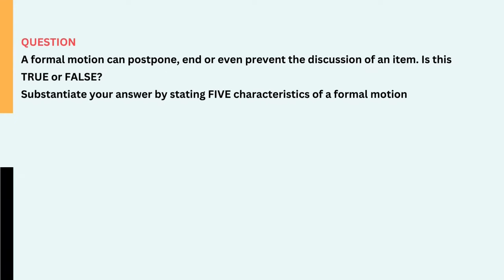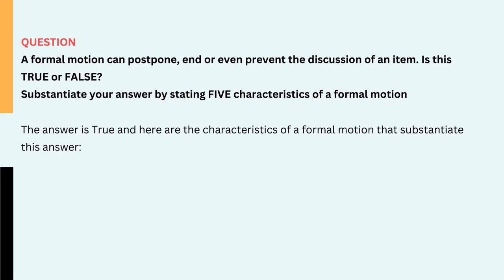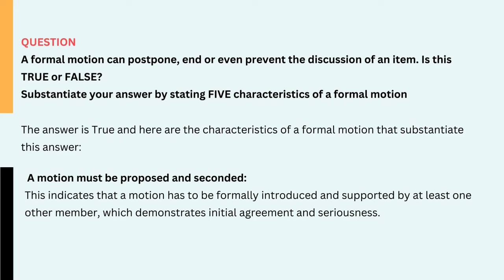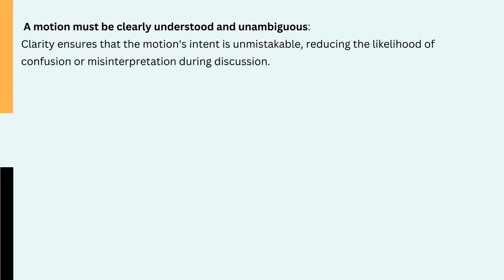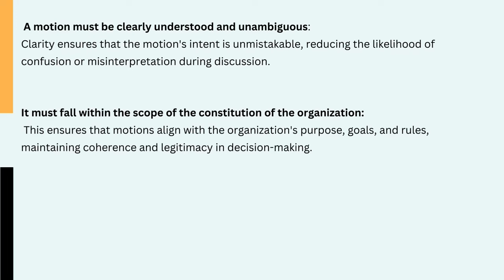Question: A formal motion can postpone, end or even prevent the discussion of an item. Is this true or false? Substantiate your answer by stating five characteristics of a formal motion. The answer is true, and here are the characteristics of a formal motion that substantiate this answer: 1. A motion must be proposed and seconded — this indicates that a motion has to be formally introduced and supported by at least one other member, which demonstrates initial agreement and seriousness. 2. A motion must be clearly understood and unambiguous — clarity ensures that the motion's intent is unmistakable, reducing the likelihood of confusion or misinterpretation during discussion. 3. It must fall within the scope of the constitution of the organization — this ensures that motions align with the organization's purpose, goals, and rules, maintaining coherence and legitimacy in decision making.